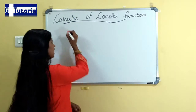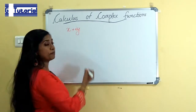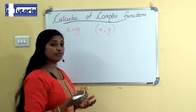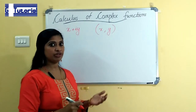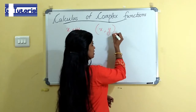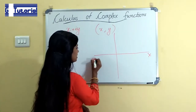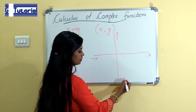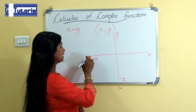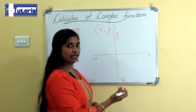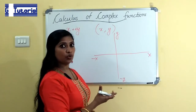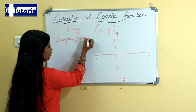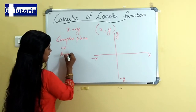Any complex number X plus iY can be represented as an ordered pair (X, Y). We know that we can express an ordered pair graphically on the XY plane. When we are representing a complex number on an XY plane, this plane is known as the complex plane or Argand plane.